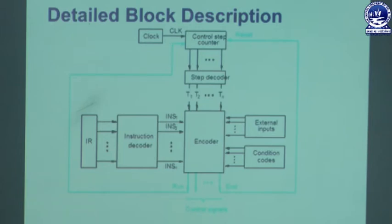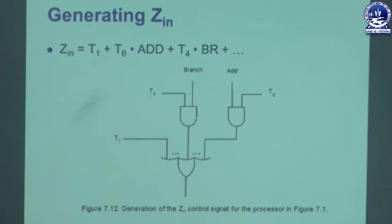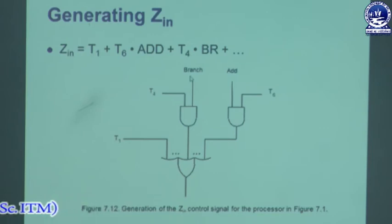All the input signals to the encoder block are combined to generate the individual control signals. Let us take an example of how the encoder generates the Zin control signal for the processor organization discussed in previous classes. The example is the addition of two instructions. This is the circuit used to generate the Zin control signal for the processor — for instructions which include one branch instruction and then the addition.